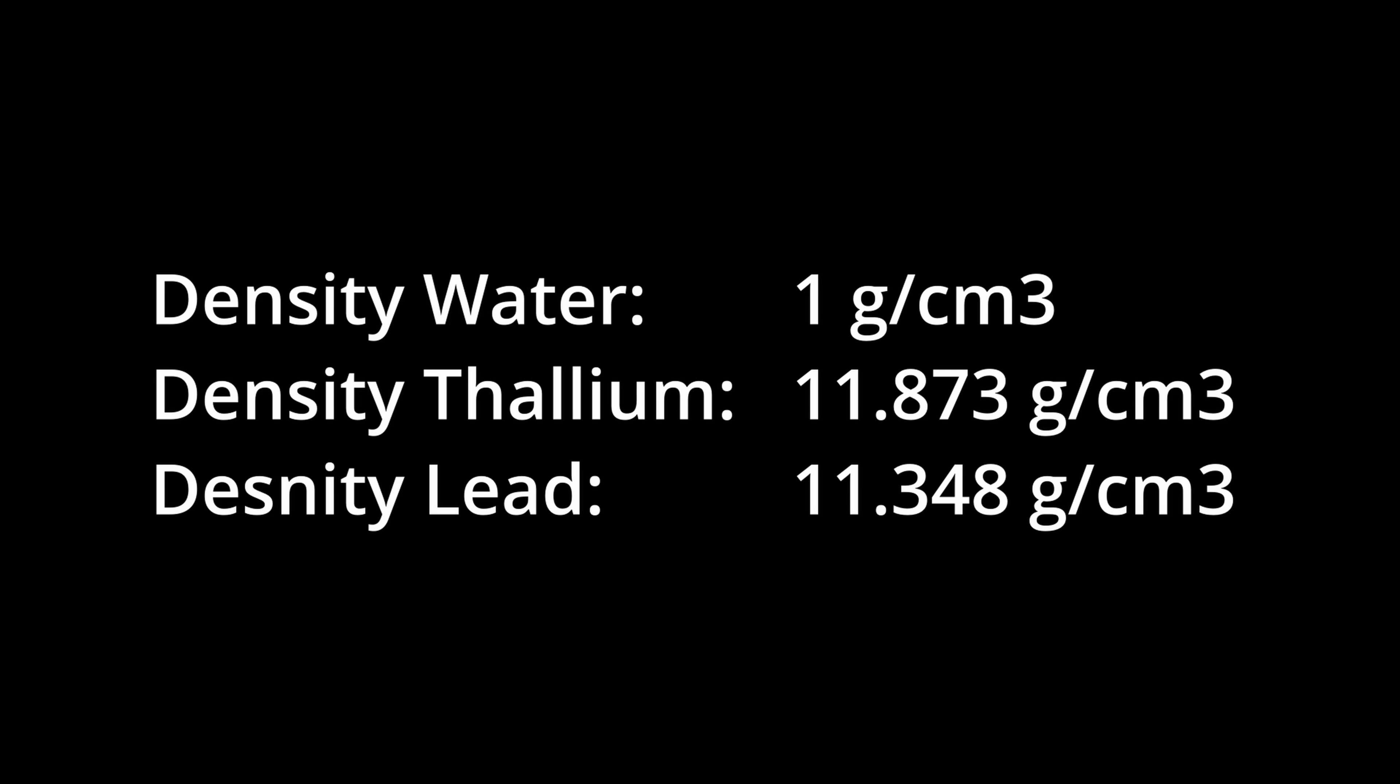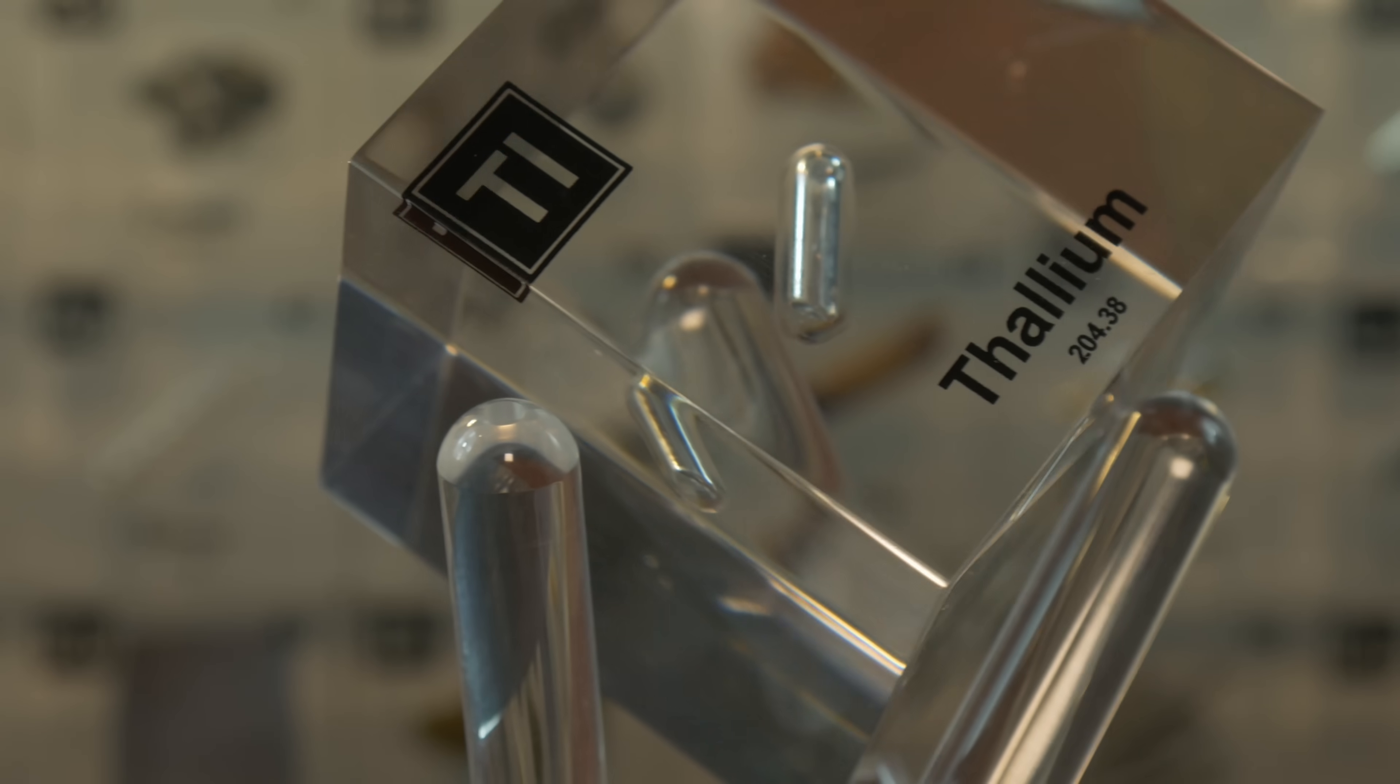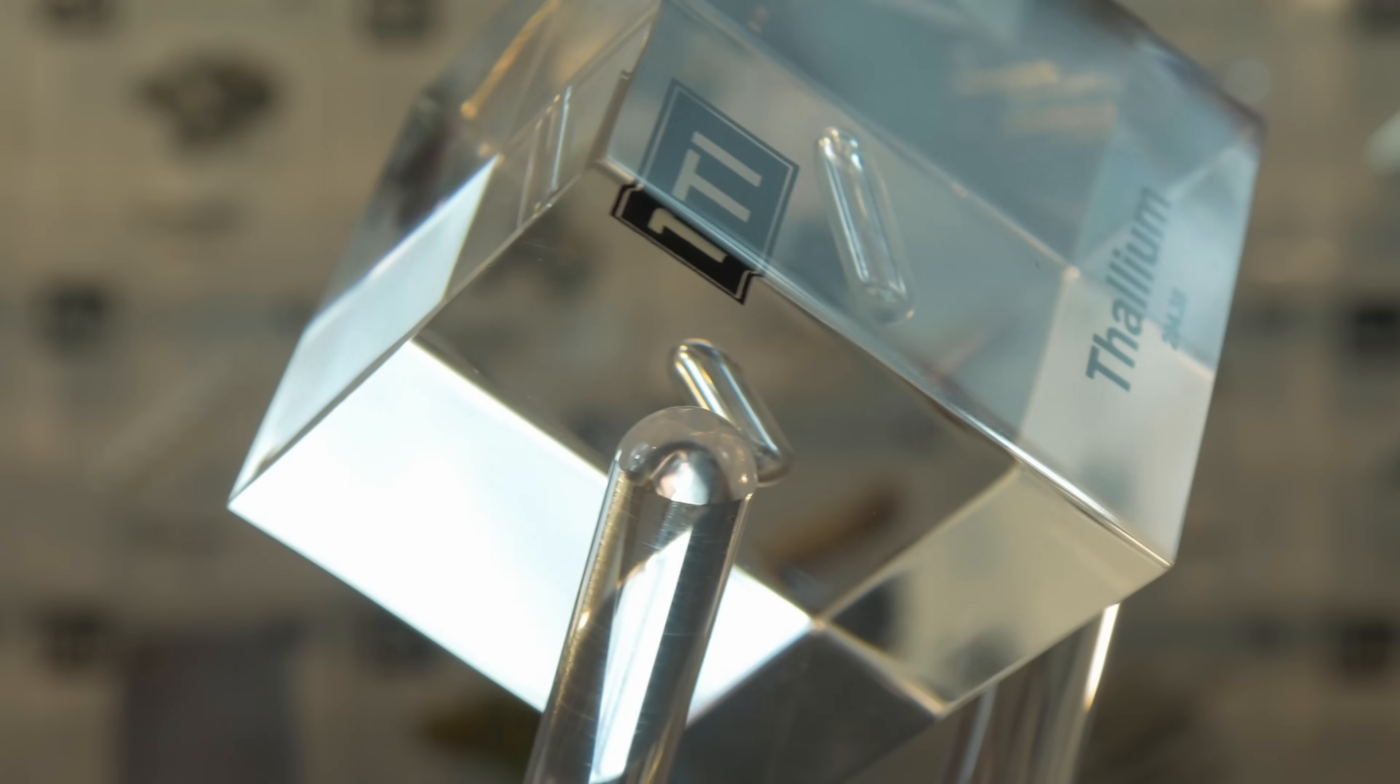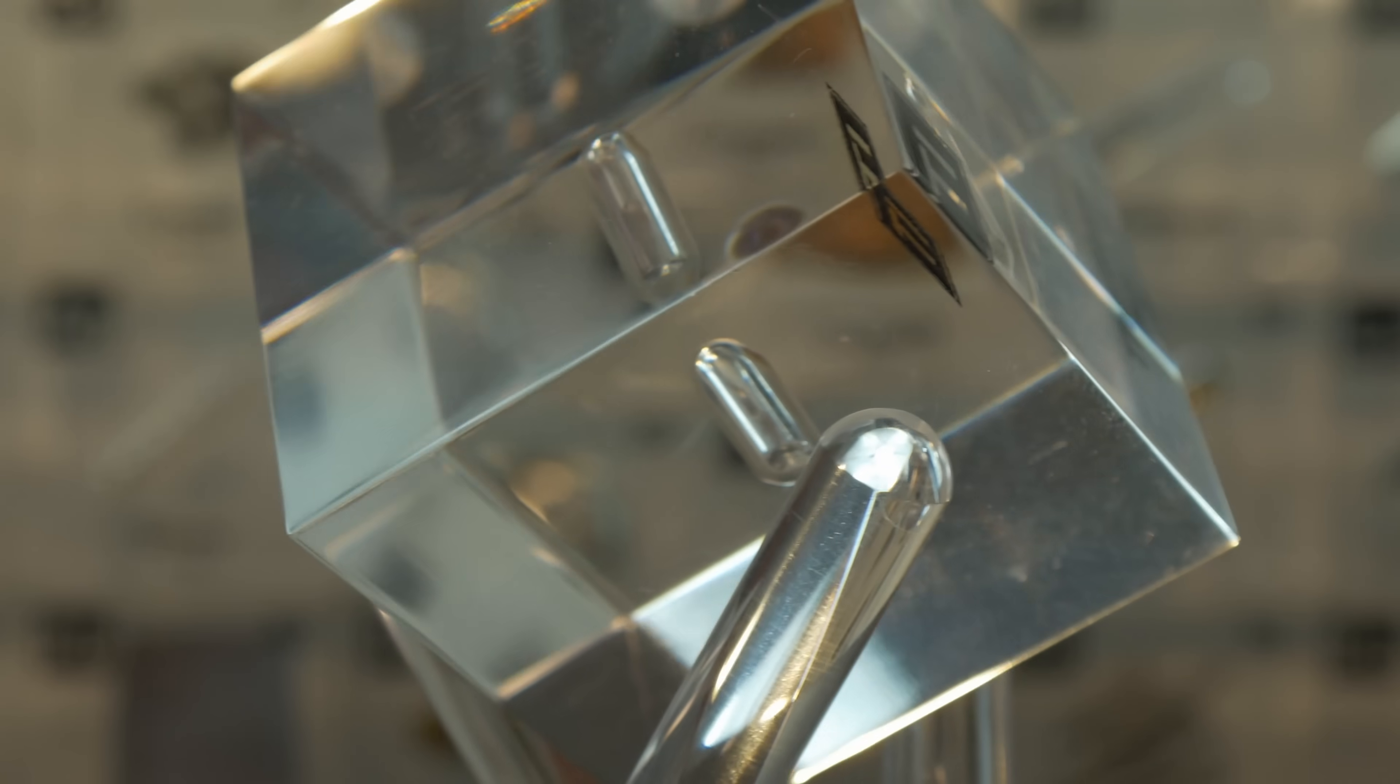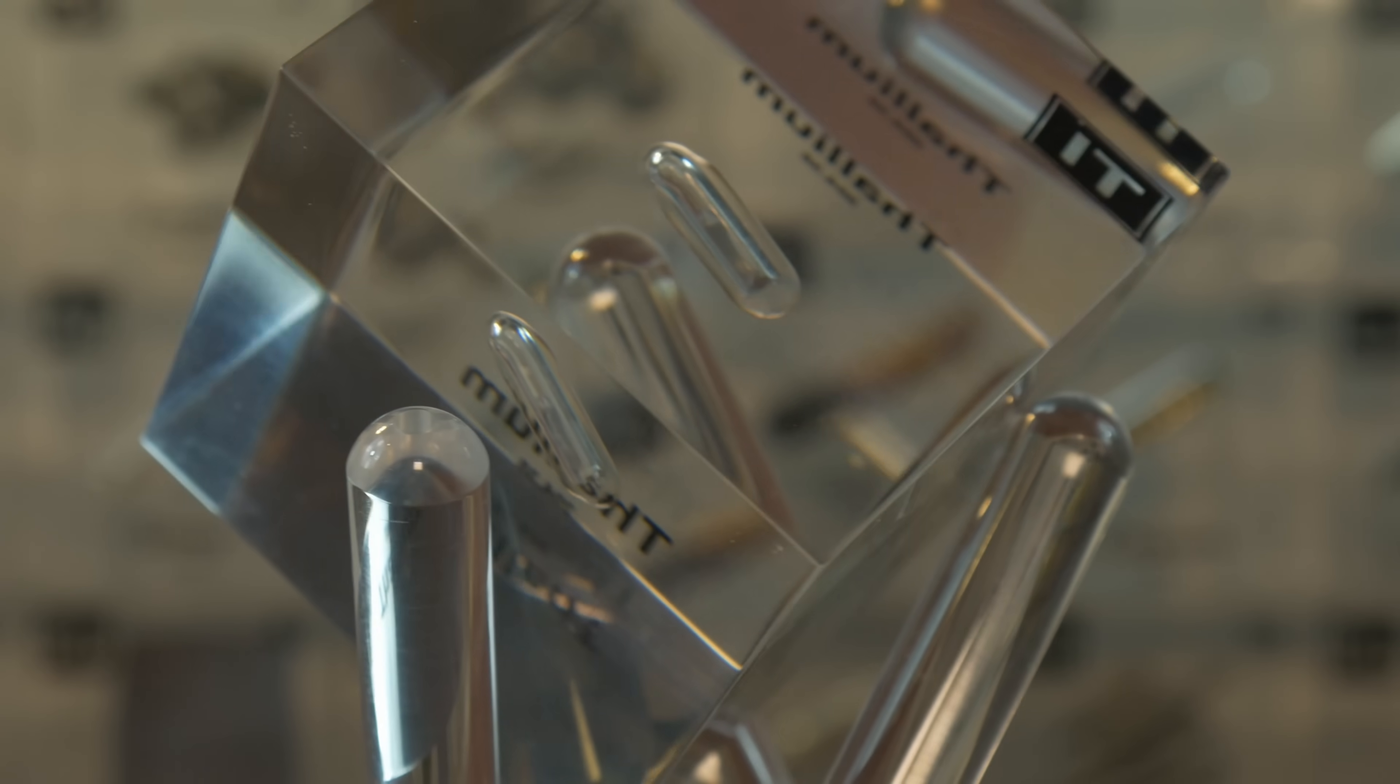Thallium is also quite heavy, about 12 times denser than water, in the same heavyweight league as lead. It melts at around 304 degrees Celsius or 579 degrees Fahrenheit, which is relatively low for a metal. That's hot, but a kitchen oven could reach it. Not that anyone should ever try melting this toxic metal on a stove.